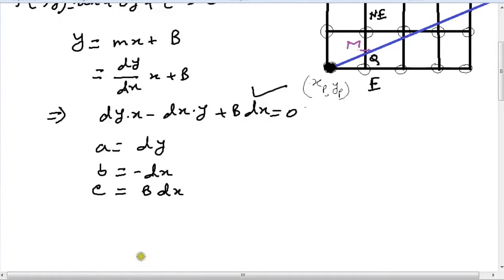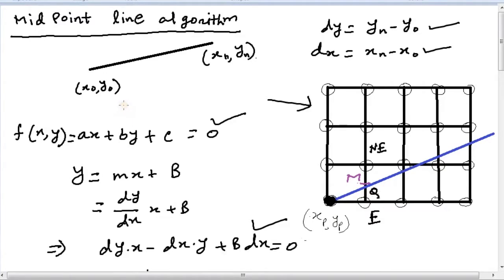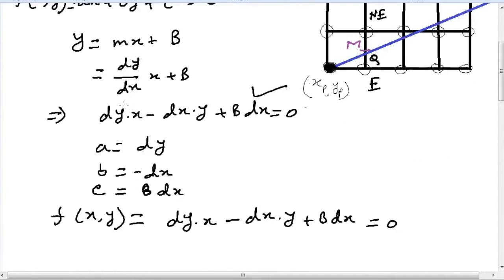So the function becomes f(x, y) equals dy into x minus dx into y plus b dx, which is 0 for all points x, y which are on the line joining x0, y0 and xn, yn.